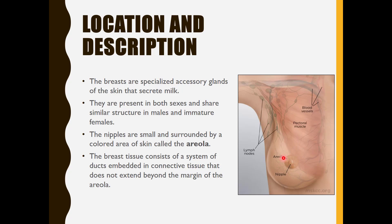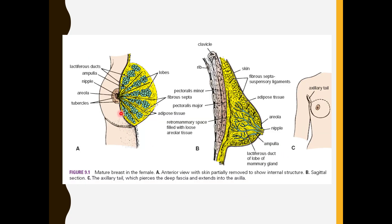In this diagram you can see the nipple, the colored area around the nipple which is called the areola, and you can see the ducts which are present in the region of the areola.